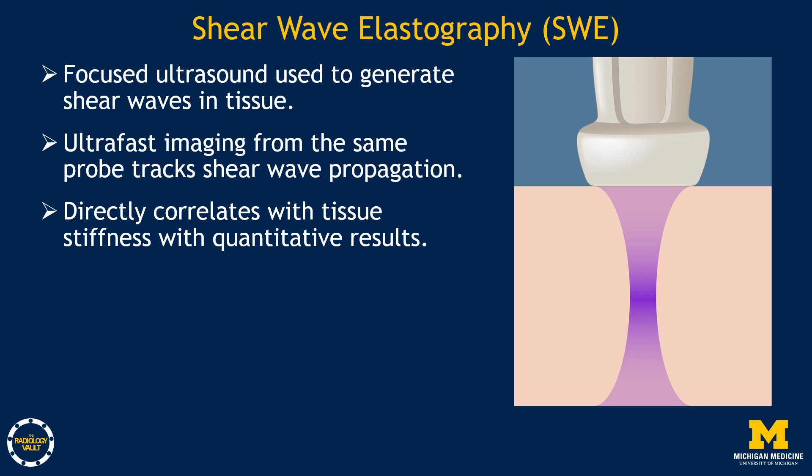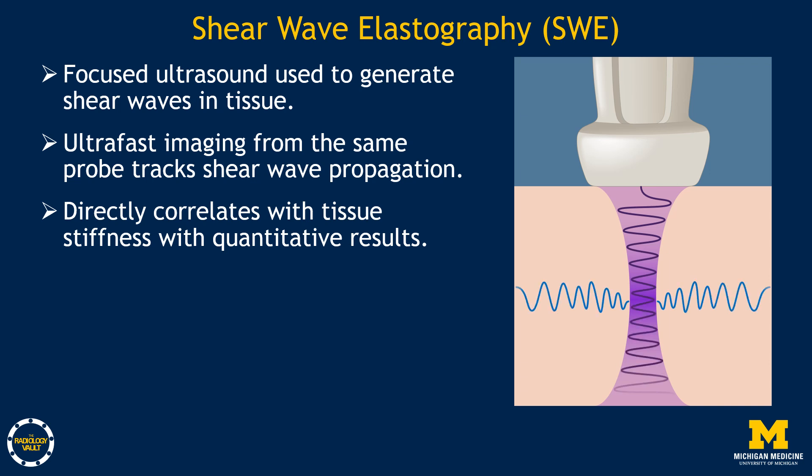Shear wave elastography uses focused ultrasound to push on the target liver tissue to generate shear waves, which propagate laterally away from the region of excitation. The ultra-fast imaging from the same probe tracks shear wave propagation, which directly correlates with tissue stiffness, with quantitative results in meters per second or kilopascal.